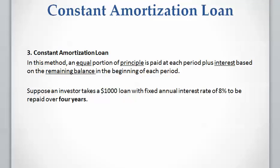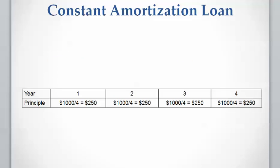In a Constant Amortization Loan, the borrower receives the loan at the present time and has to pay an equal portion of principal per period, plus the interest that is calculated based on the remaining balance. In a Constant Amortization Loan, the principal paid in each period is constant and it is not changing.